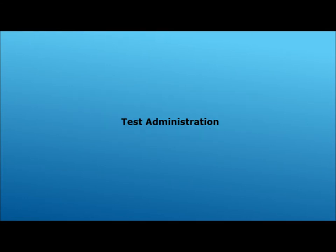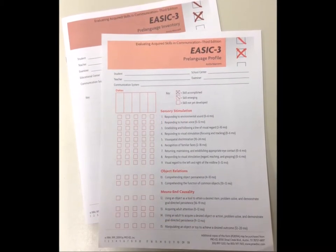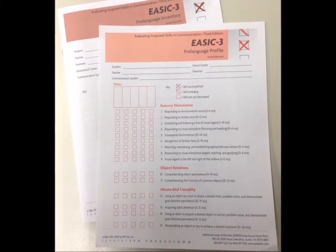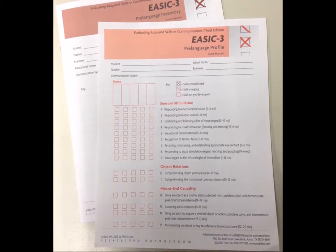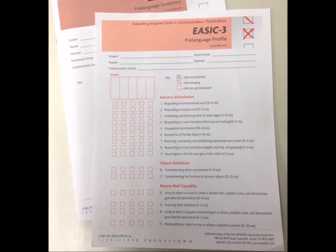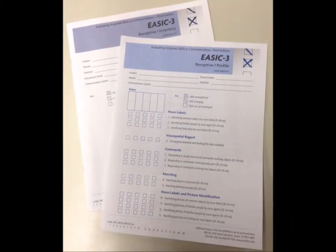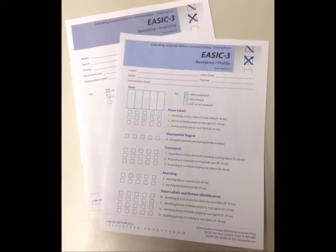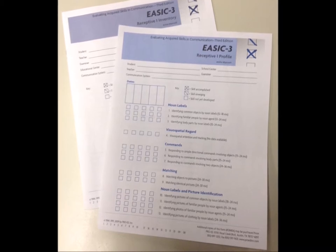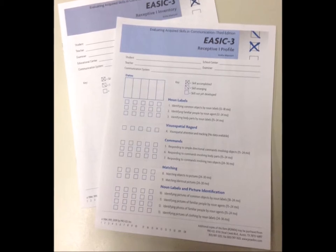Test administration. The pre-language inventory assesses skills that emerge prior to meaningful speech, mostly developing between birth and 24 months. The Receptive 1 inventory assesses initial emerging comprehension skills such as simple noun labels, basic verbs, simple location and prepositional commands, primary adjectives and attributes, and basic questions.